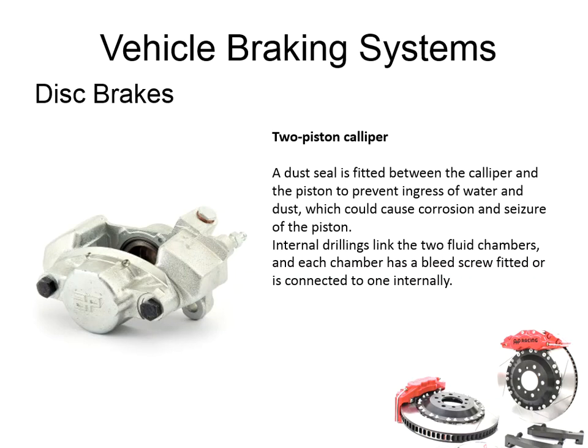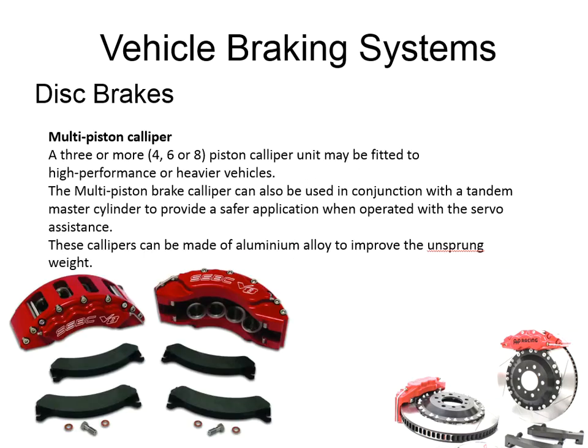That's our first type: the two-piston caliper. A variation on this is the multi-piston caliper, the type you might see on high-performance or heavier vehicles. The difference here is we have multiple pistons — perhaps three, four, or even up to eight pistons per caliper. More pistons means more surface area for the brake fluid to press against, which means more pressure on the brake pad and more clamping force against the disc. Because these calipers are bigger, it's quite common on performance variants to see them made from aluminium alloy to reduce unsprung weight.